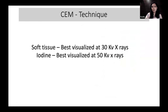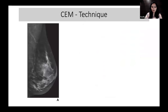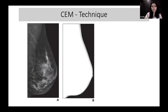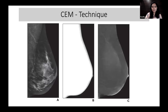In contrast enhanced mammography we use two sets of imaging: a low energy image and a high energy image. Soft tissue is better visualized at 30 kV (low energy), and iodine is best visualized at 50 kV. The low energy image is similar to a 2D mammogram; the high energy image is unreadable. The system post-processes these to produce a recombined image where the background tissue is completely suppressed and only enhancing masses or non-mass abnormalities are visible.